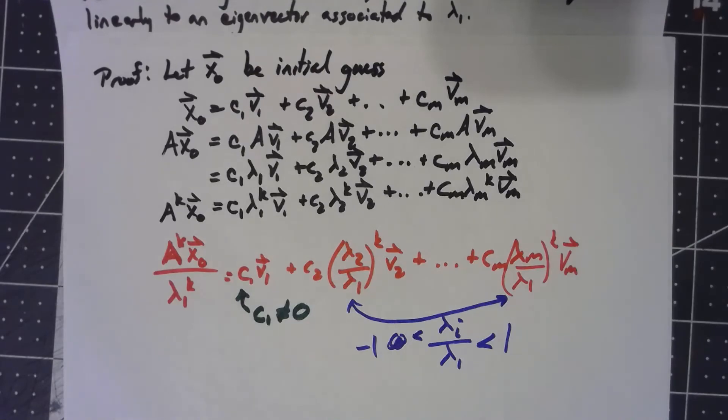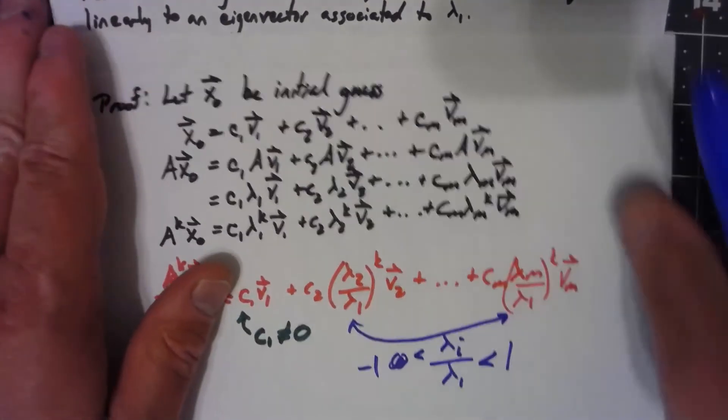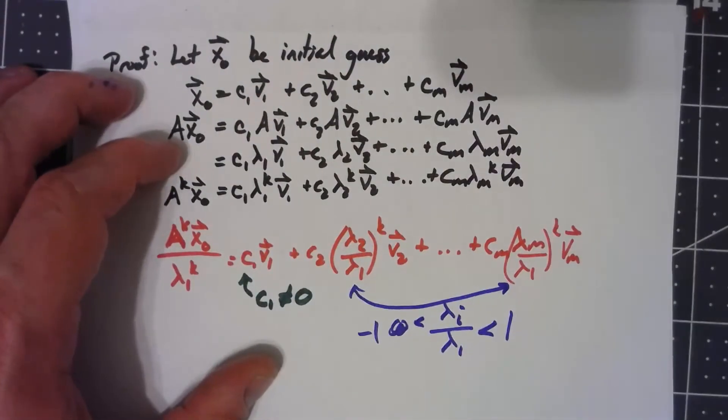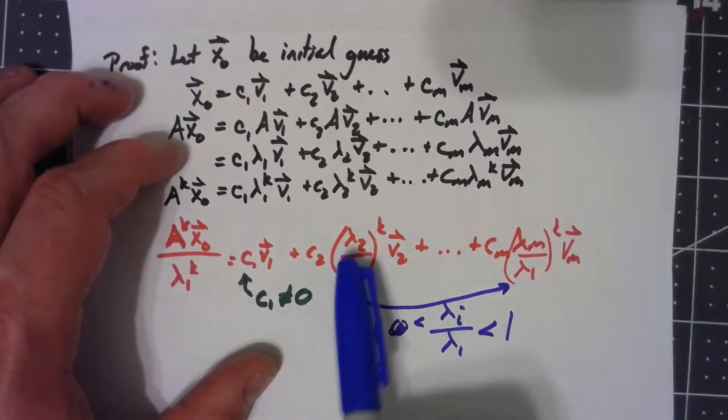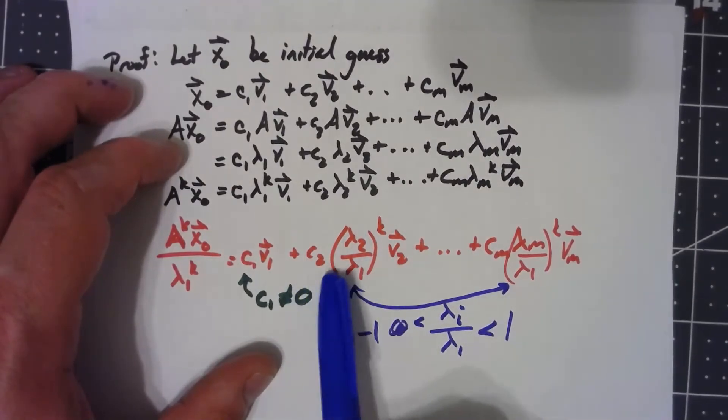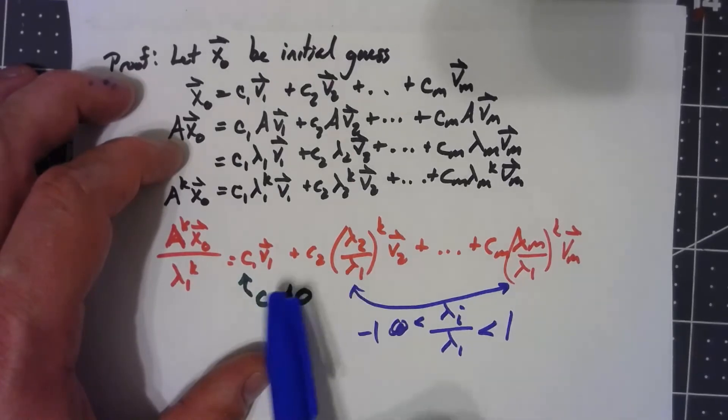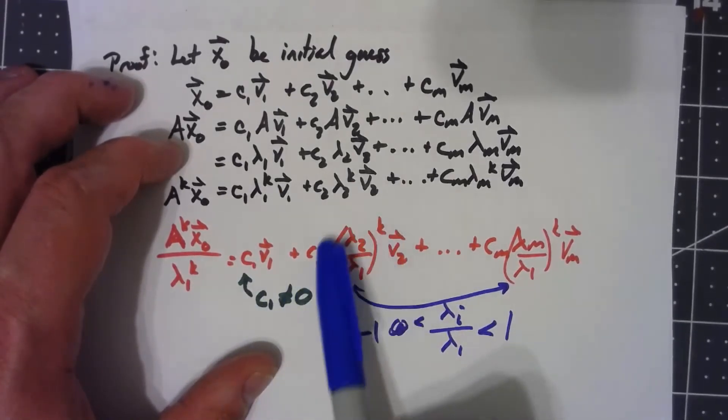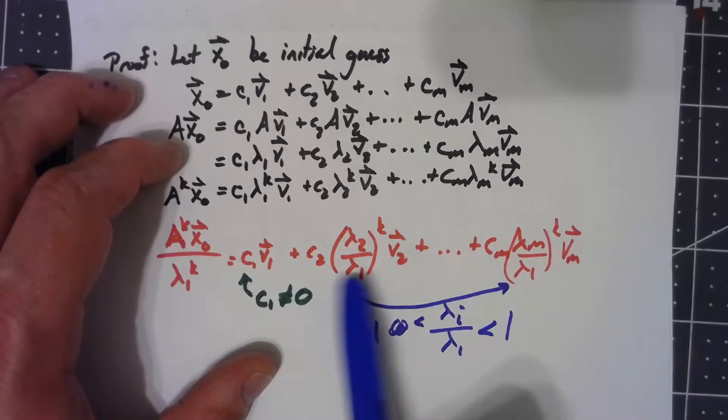It's also worth noting that I did say it converges linearly. I'm not going to go too much into that, but in order to converge linearly, all we need to know is that c_2 is not zero as well. If c_2 is not zero, then this thing converges linearly, and in fact, the reciprocal of this is the rate at which it is converging.